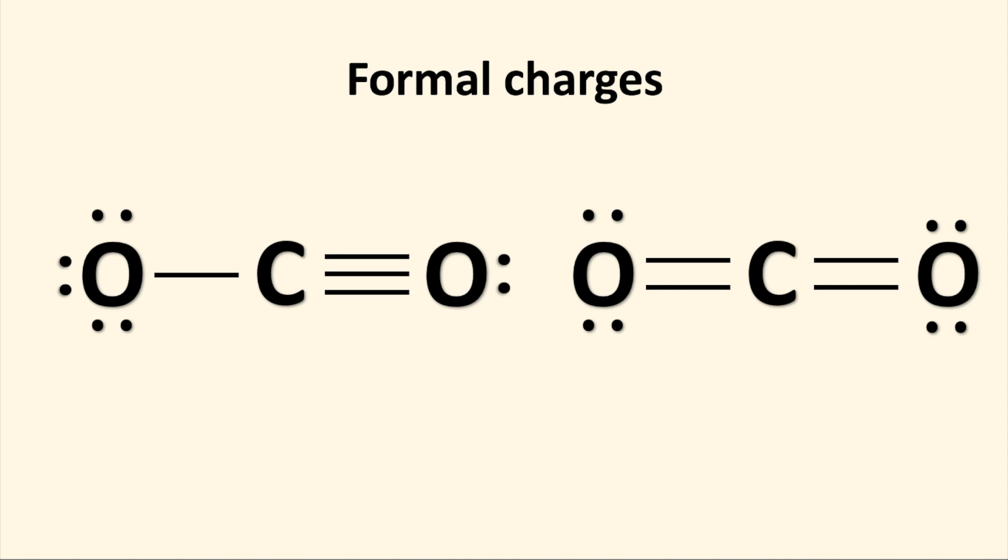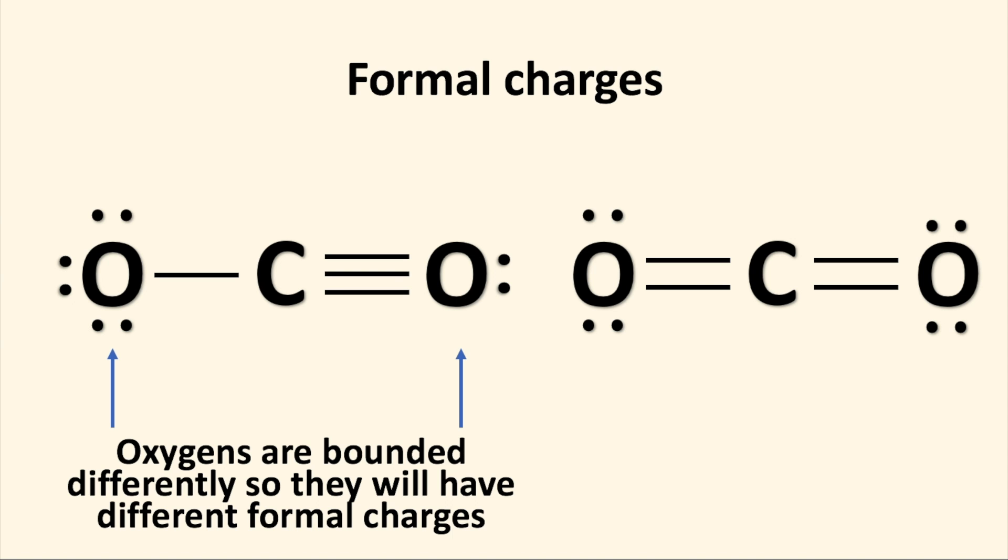Let's do a problem and use formal charges to determine the most stable arrangement of carbon dioxide, CO2. For the following structures, let's calculate the formal charge for the leftmost structure. In this case, carbon is singly bonded to an oxygen and triply bonded to the other oxygen. In this case, both oxygens are bonded differently to carbon, so they will have different formal charges.